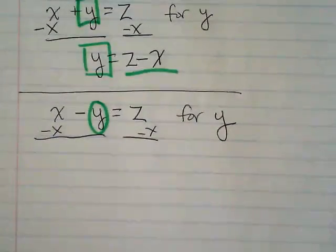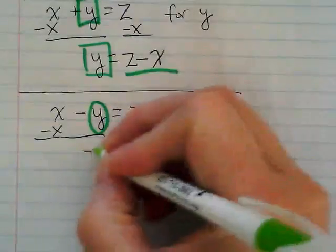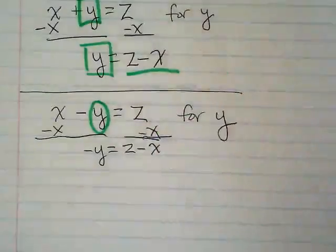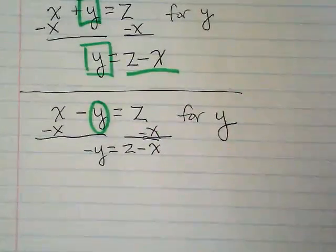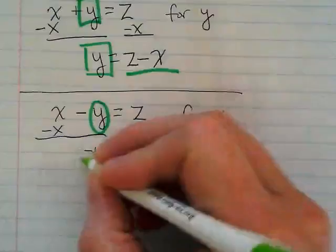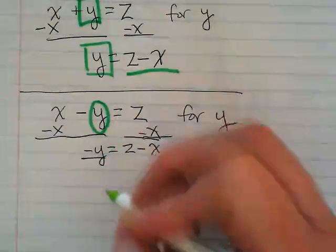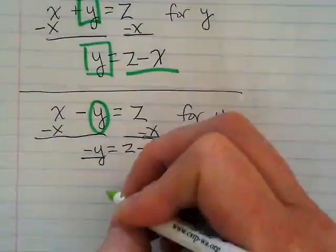What are we left with on the left side of the equation right now? Negative Y. Negative Y equals Z minus X. Okay. I want to, not subtract, I'm sorry, I want to divide it by negative one.